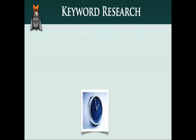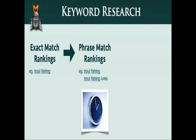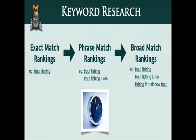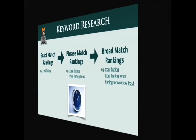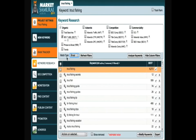You usually start with exact match rankings. Then, as you add content and obtain links, you obtain phrase match rankings. And finally, as your site develops more authority, you obtain broad match rankings. Coming back to Market Samurai, what this means is that the match type provides us with a way to look into the future, almost as though we had a crystal ball.